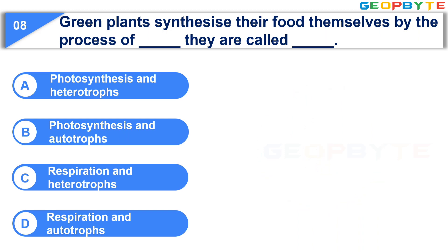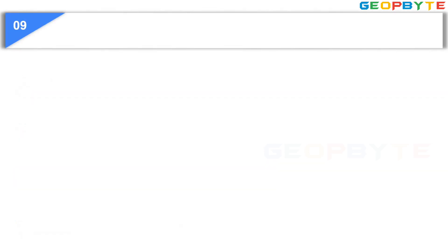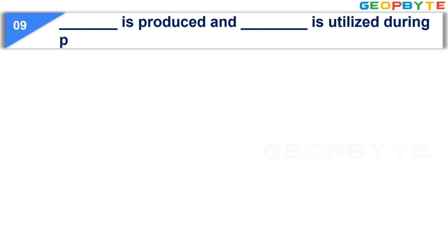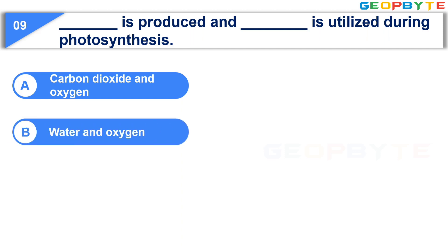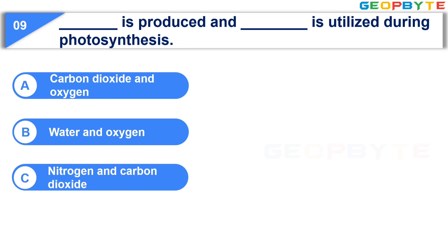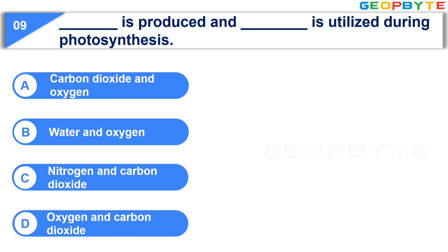Your time is up and the correct answer is Option B, Photosynthesis and Autotropes. Moving to the ninth question: Dash is produced and dash is utilized during photosynthesis. Option A: Carbon Dioxide and Oxygen. Option B: Water and Oxygen. Option C: Nitrogen and Carbon Dioxide. Option D: Oxygen and Carbon Dioxide. Your time starts now.